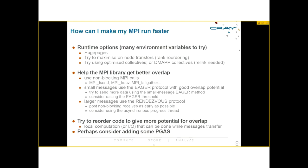The compiler and linker wrappers take care of including the correct headers and libraries. For tuning when your application spends a lot of time in communication, there are several runtime options and environment variables to try. You could try huge pages, maximize on-node transfers through rank reordering, use optimized collectives or DMAP collectives (though DMAP requires relinking), or help the library achieve better overlap by using non-blocking MPI calls such as MPI_Isend, MPI_Irecv, and MPI_Iallgather.